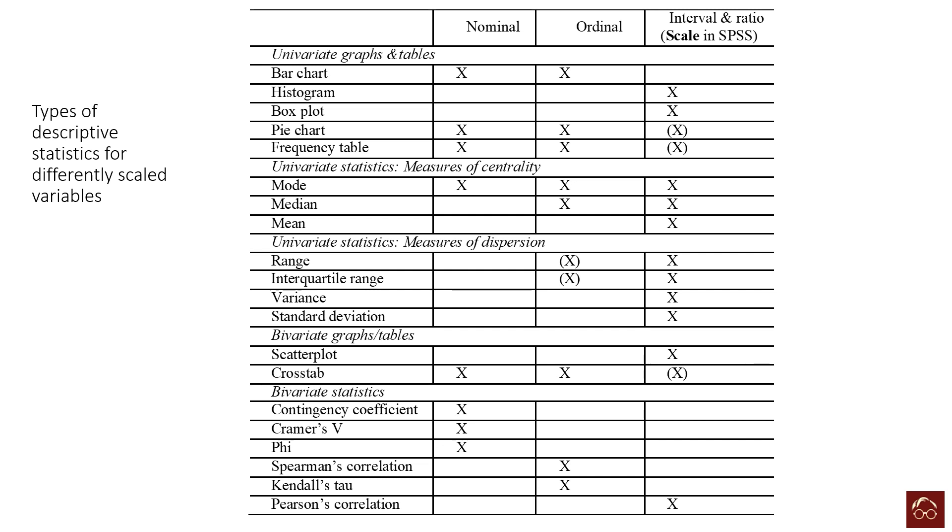In terms of univariate statistics, measures of centrality—mode, median, and mean—for nominal we should use only mode. For ordinal we can use mode and median. But for interval and ratio we can use all three: mode, median, and mean.